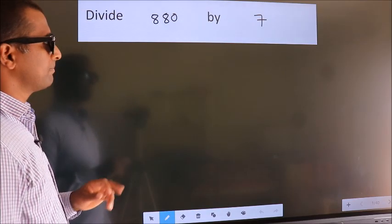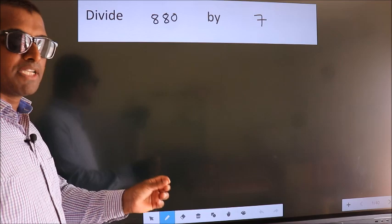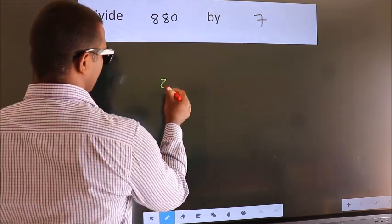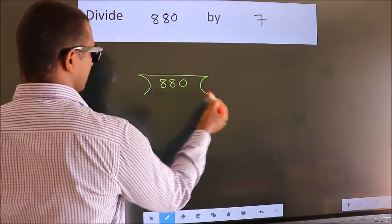Divide 880 by 7. To do this division, we should frame it in this way: 880 here, 7 here.